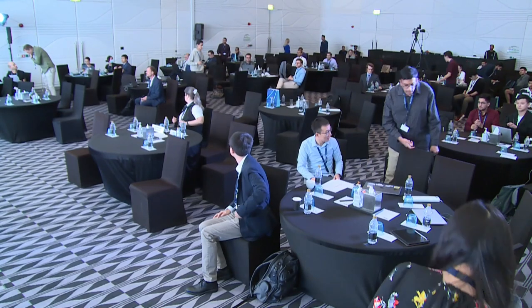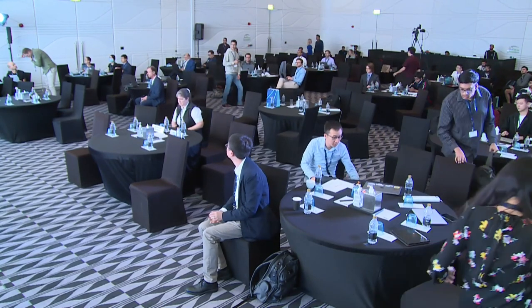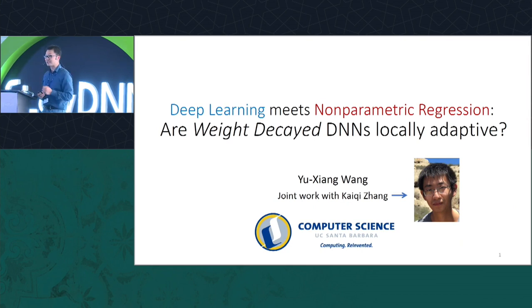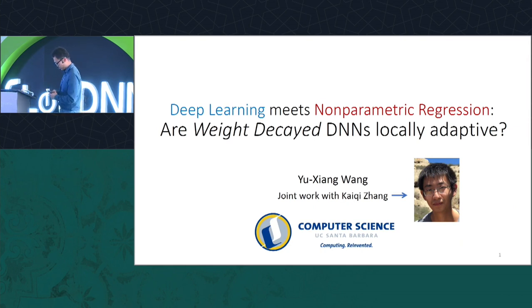Thanks everybody for coming, and I'd like to first thank the organizers for putting together this excellent workshop. Today I'm going to talk about work with my student Kai Chi on a slightly different kind of theory for deep neural networks. This is also our first work in this domain, so I believe this is really the right audience to get feedback on this line of work, and I'm looking forward to your questions.